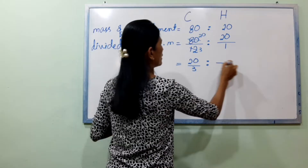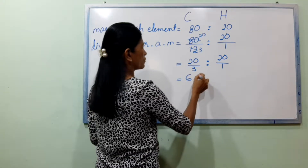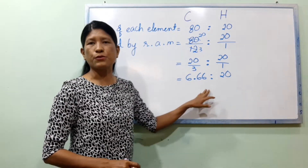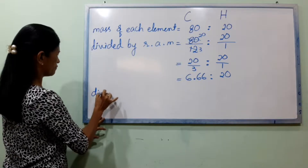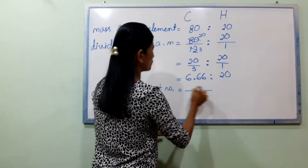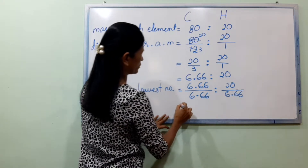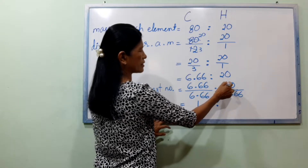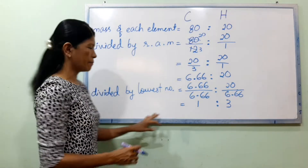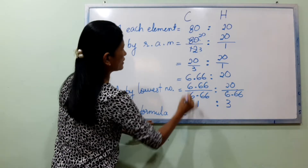Divided by the relative atomic mass — the molar mass divided by relative atomic mass. So we have the number 6.66. The number 6.66 — we are going to work with 6.66. Now we have the number 6.66, and the meter number is 2.